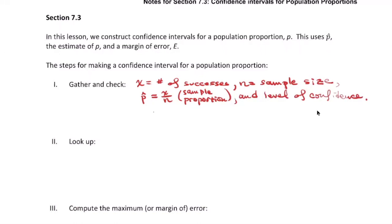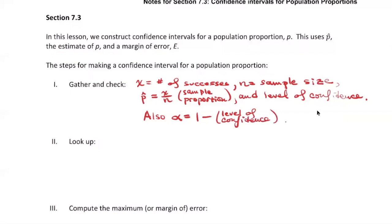You'll also need the alpha value. Alpha is one minus the level of confidence. Don't forget about that.